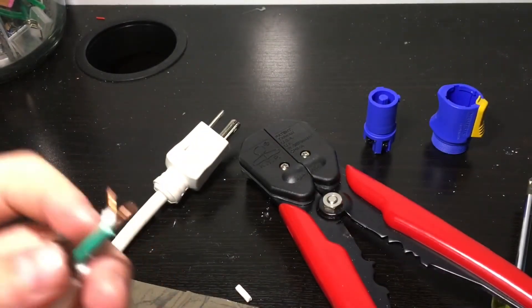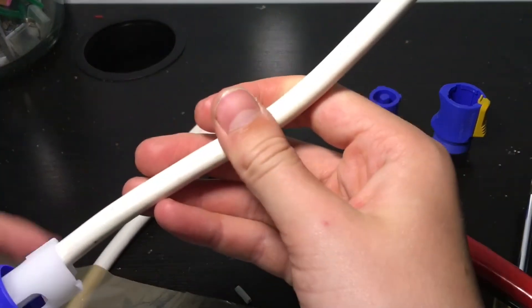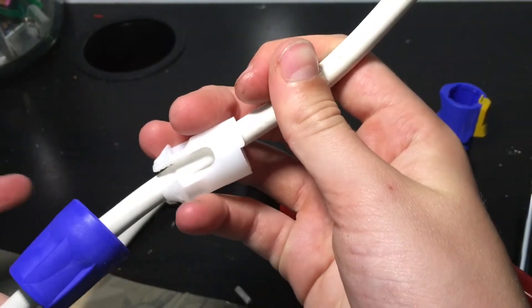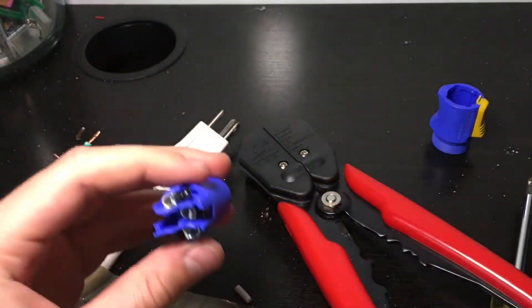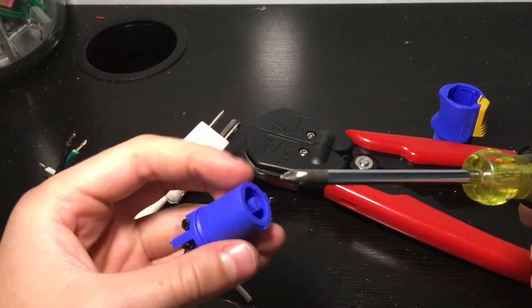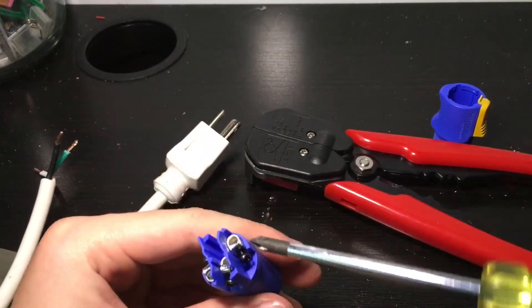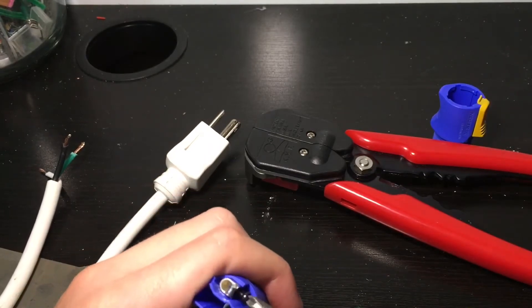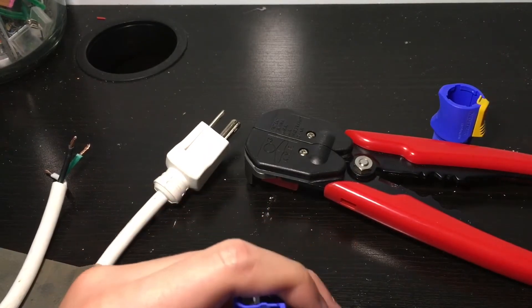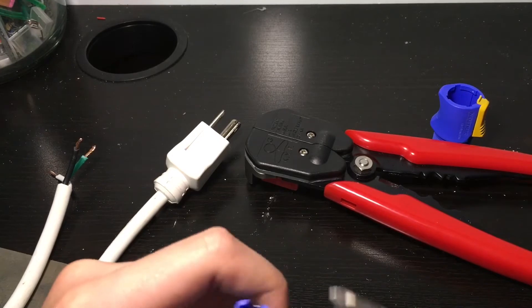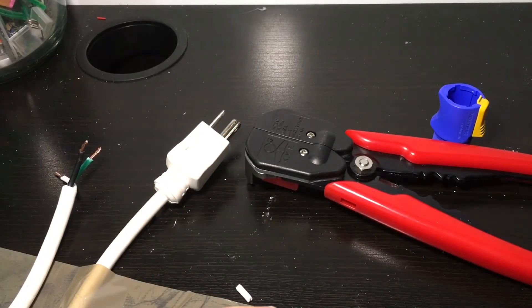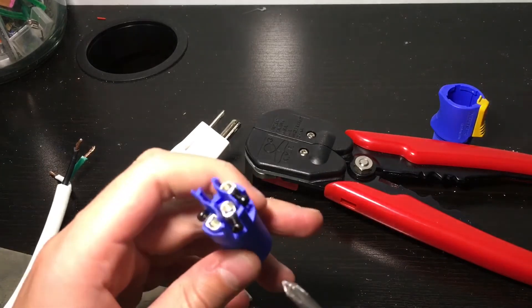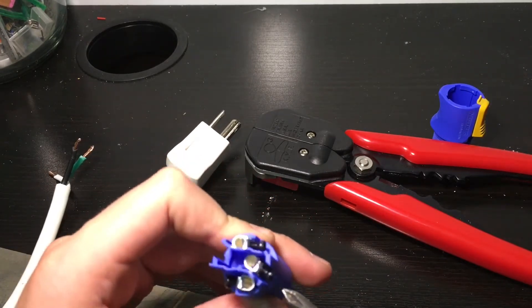Now that that's done, make sure that your strain relief and back portion of the jack are on your cable. You're going to take this part of the PowerCon jack and unscrew all three of these garage doors, as they're called. Unscrew them until the holes are all the way open, but the metal pieces and screw aren't coming out.